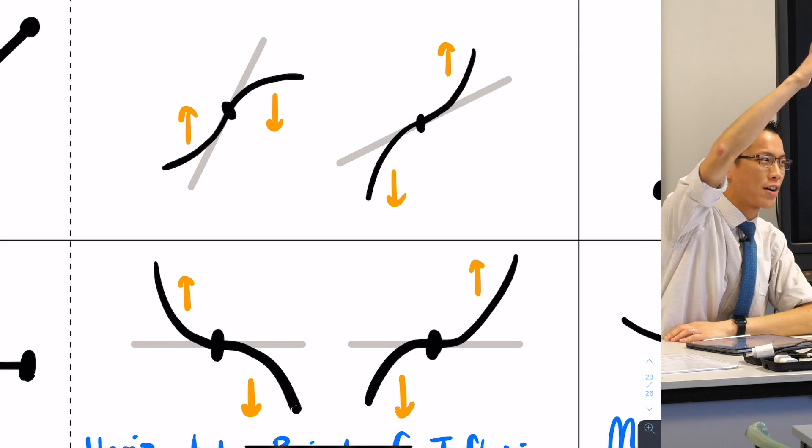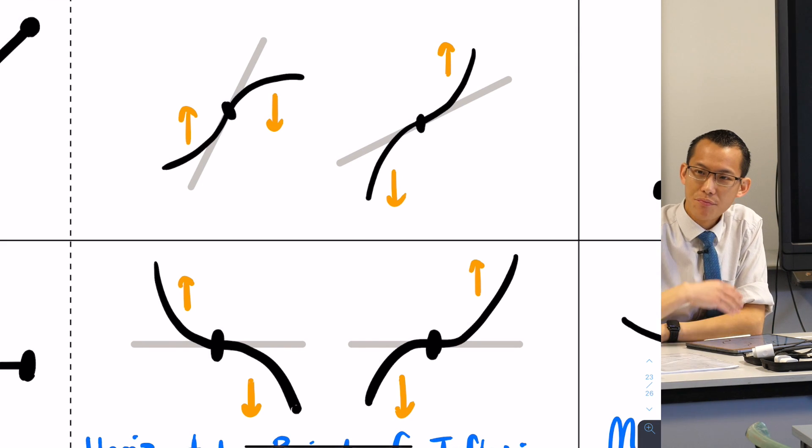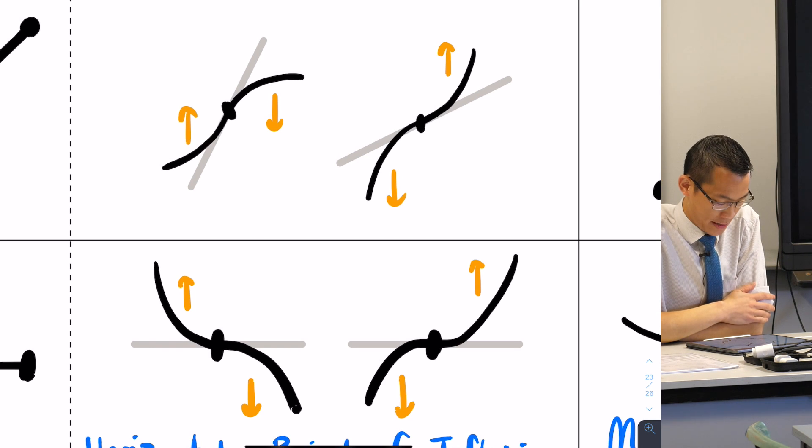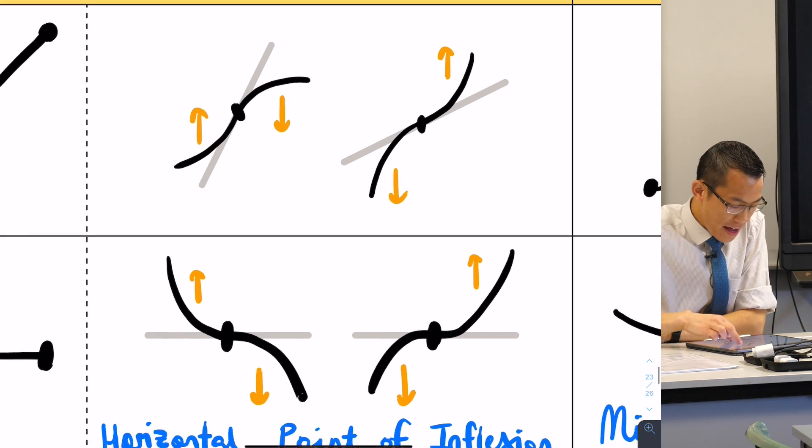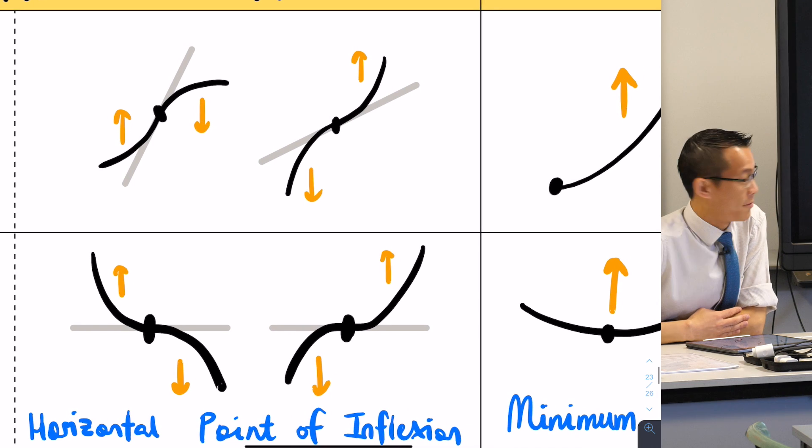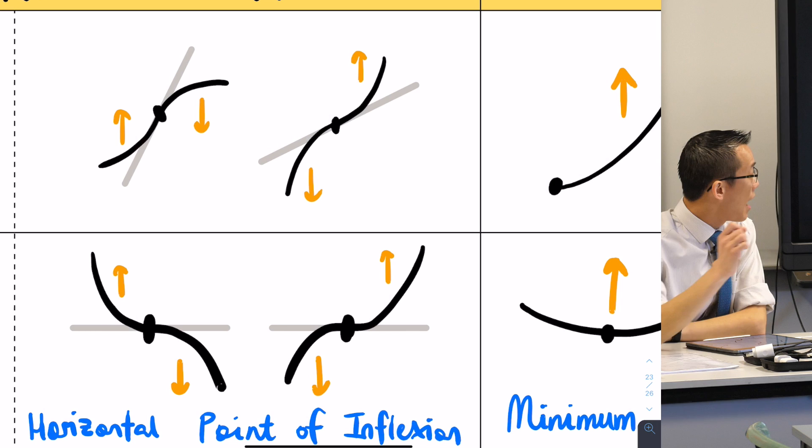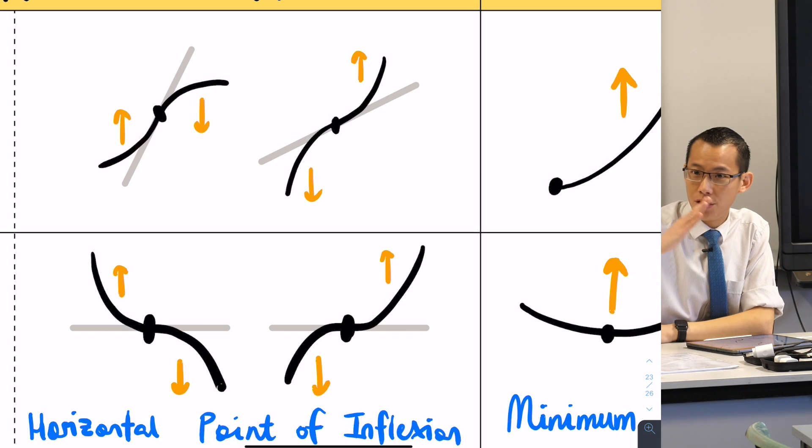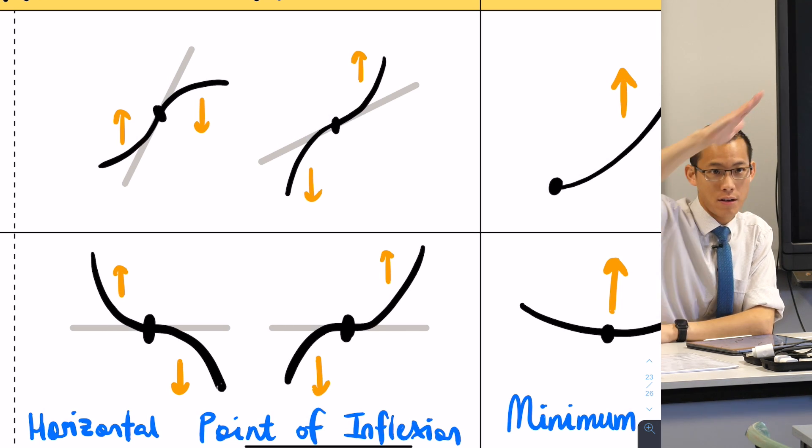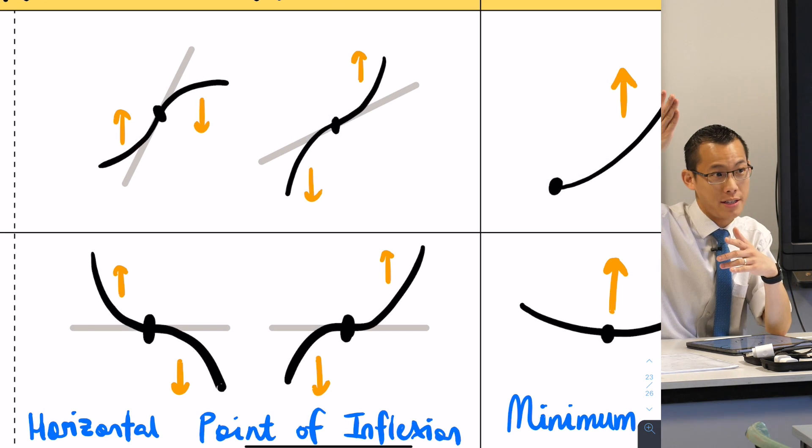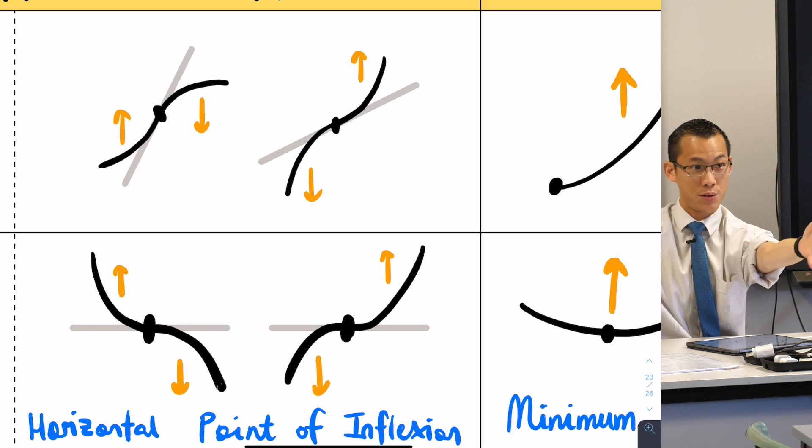Both of these are what we call points of inflection. Now these are increasing points of inflection because if you have a look, I've showed it in gray there. Have a look at the gradient at the point of inflection. Do you notice the gradients are both going up? So they're not horizontal points of inflection, they're increasing, which is why they belong in that top row.